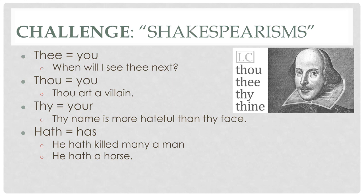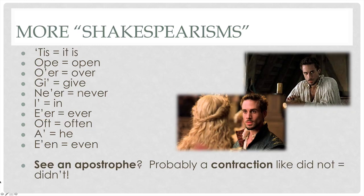Now let's talk about some of the individual challenges we see in Shakespeare's writings. The first one we're calling Shakespeare-isms — the older English versions of common words we see today. For example, 'thee' means 'you': 'When will I see thee next?' Another form of you is 'thou,' used as the subject — 'thou art a villain' means 'you are a villain.' 'Thy' is going to be 'your.' 'Hath' is going to be 'has.' And then there are words with apostrophes — contractions, similar to what we have today. For example, ''tis' is 'it is,' 'ope' is 'open,' 'oft' is 'often.' The general rule is if you see an apostrophe, it's probably some sort of contraction.